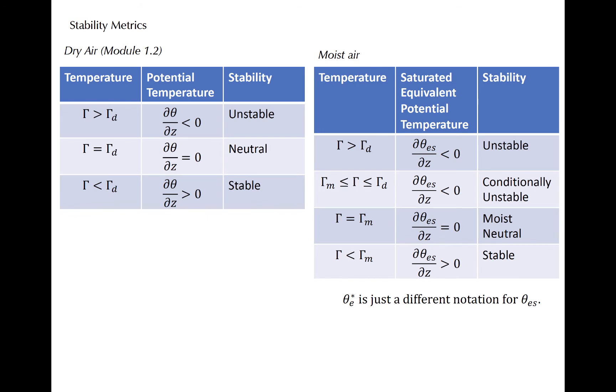A conditionally unstable environment is one in which the environmental lapse rate is between the dry and the moist adiabatic lapse rates. Both absolutely unstable and conditionally unstable environments have negative vertical gradients of saturation equivalent potential temperature. However, the two stability metrics can be separated by assessment of the environmental lapse rate. A conditionally unstable environment is one in which a parcel can become unstable if it is lifted to saturation, or the lifted condensation level, dry adiabatically, and then onward moist adiabatically to the pressure level at which it is warmer than the environment. This latter level is known as the level of free convection.